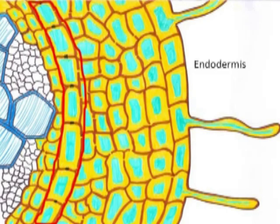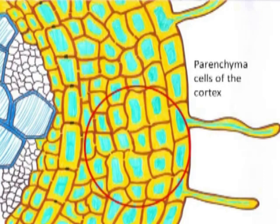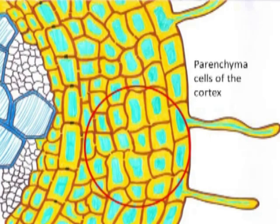This is the structure of the root showing the endodermis and the parenchymatous cells of the cortex. How does water move from the parenchyma to the endodermis? What is the role of Casparian strips? How do Casparian strips help in the movement of water? For this, we have two pathways.